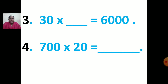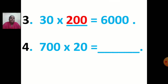Now we will see the third sum: 30 multiplied by dash equals 6,000. Set the table of 3 — in the table of 3, when you get 6: 3 twos are 6, so 2 is the answer. But how many zeros are in 6,000? 3 zeros. And in 30, 1 zero. So put 2 more zeros after 2. Your answer will be 200. So 30 multiplied by 200 is equal to 6,000.